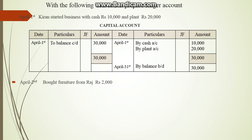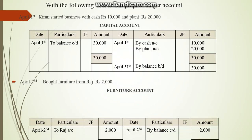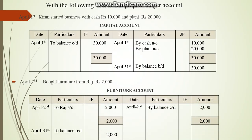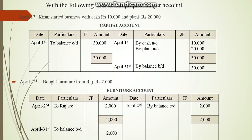The second transaction: bought furniture from Raj. Furniture belongs to a real account — debit what comes in, credit what goes out. Furniture is coming in, so we debit the furniture account and credit Raj's account for 2,000. The same balance has to be carried down.